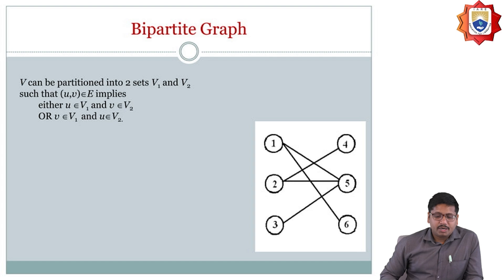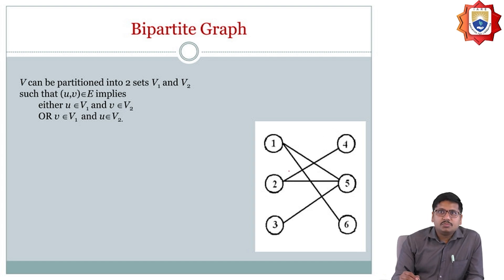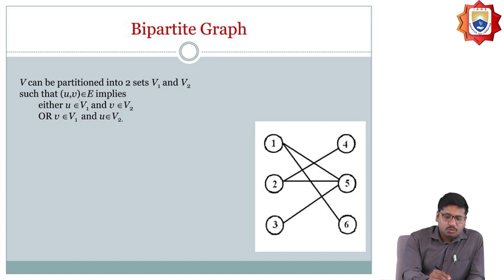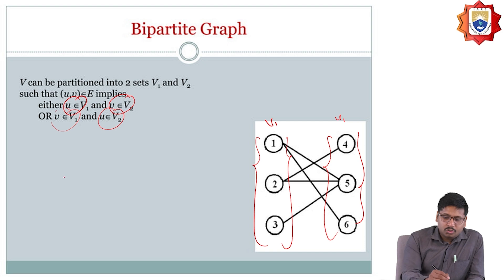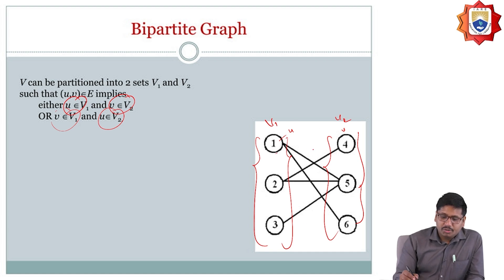Next one is bipartite graph. A vertex set can be partitioned into two sets V1 and V2 such that for edge (u, v), either u belongs to V1 and v belongs to V2, or u belongs to V1 and v belongs to V2. Whenever the mapping is done between the two disjoint sets, it should be called as a bipartite graph.